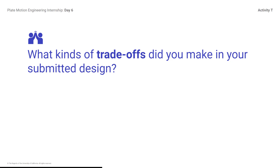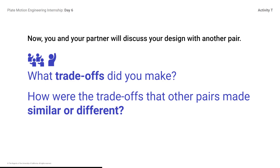What kinds of trade-offs did you make in your submitted design? Now you and your partner will discuss your design with another pair — what trade-offs did you make, and how were the trade-offs that other pairs made similar or different? For example: trying to get the longest average warning time might require using more sensors, which can be expensive and might increase the number of false alarms. You will have a chance to write about your trade-offs for after-hours work. The explanations you provide will help you when it's time to write a conclusion for your final proposal at the end of the project.